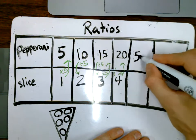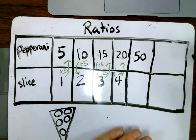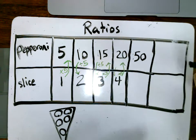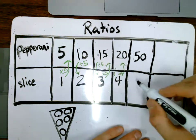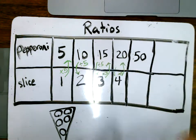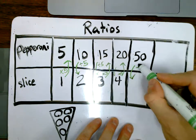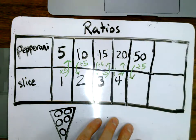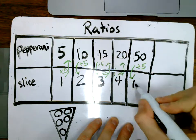We're told that we have 50 pieces of pepperoni. We want to know how many slices of pizza can we make using that still perfect ratio. Well, we would need to divide by five to go down, so when we divide by five, we're going to have 10.